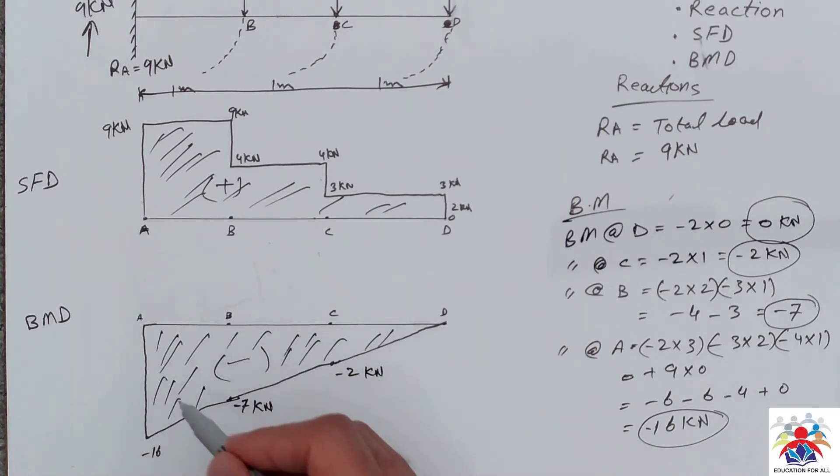So that's how you can draw a bending moment diagram having three point loads on a cantilever beam. That's it for today. Thank you for watching my video. Please don't forget to subscribe to my channel.